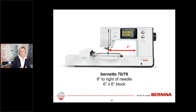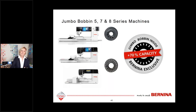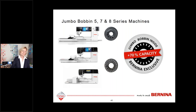In the following webinars I'll reference different features and point out which machines have them. An added benefit of the eight, seven, and five series machines is the jumbo bobbin, which holds 70% more thread — meaning I hardly need to change the bobbin at all while quilting an entire project. This is definitely a benefit for computerized quilting.